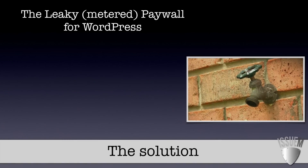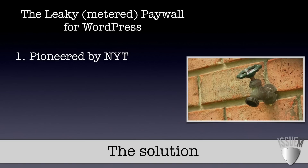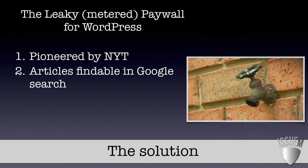So what's the solution? We call it the leaky paywall for WordPress, or the metered paywall. This was originally pioneered by the New York Times. Essentially what it does is it gives the reader the ability to read a certain number of articles in a time period for free and then prompts the reader to subscribe.